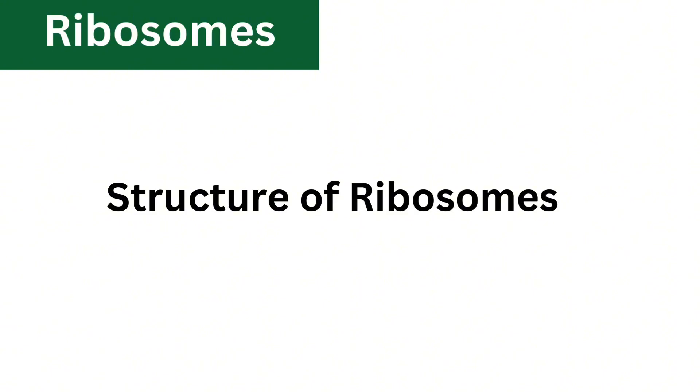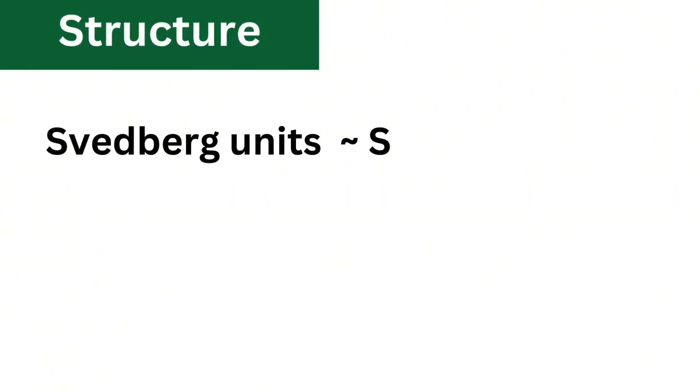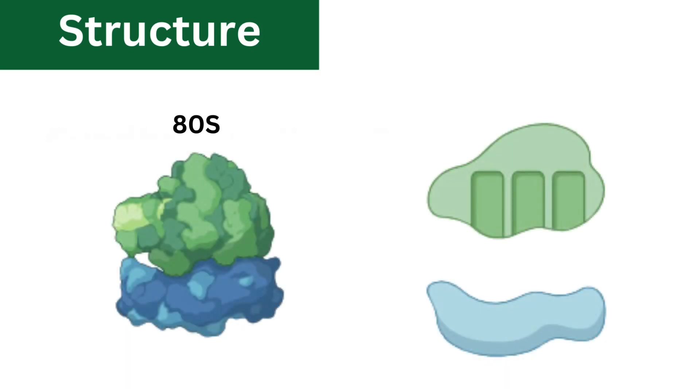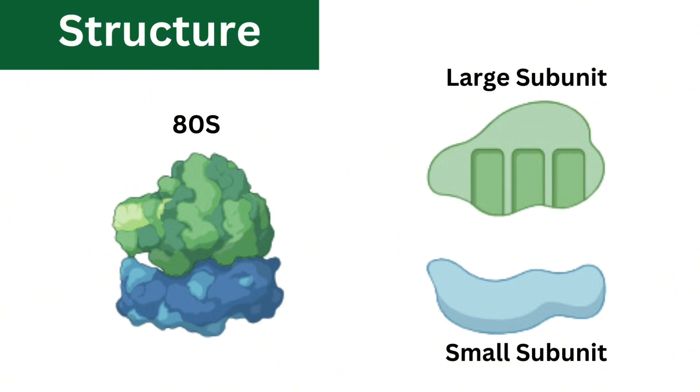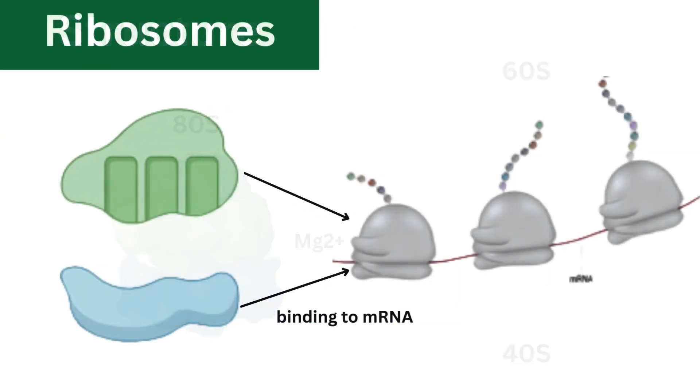Let's discuss the structure of ribosomes. The ribosome size is measured in Svedberg units. The eukaryotic ribosome is 80S and comprises two subunits: a large 60S subunit and a small 40S subunit. These subunits are attached by magnesium ions. The small subunit is responsible for binding to the mRNA, while the larger subunit catalyzes the formation of peptide bonds between amino acids, thus assembling the protein chain.